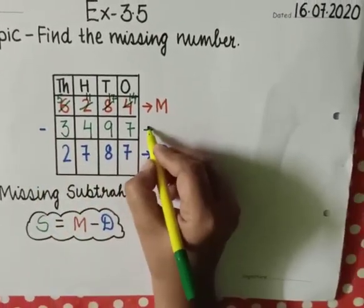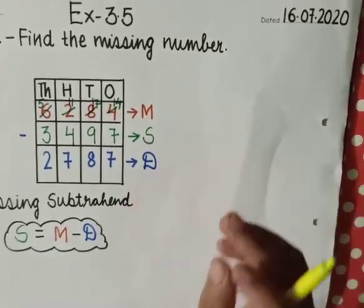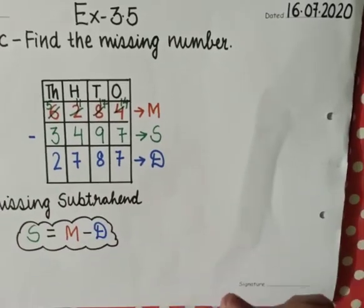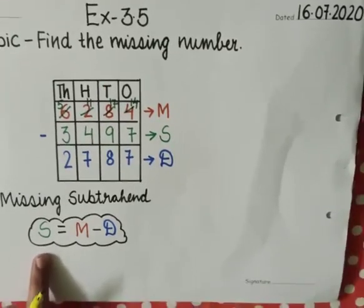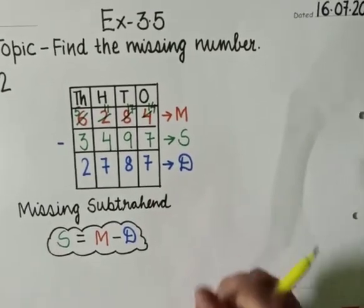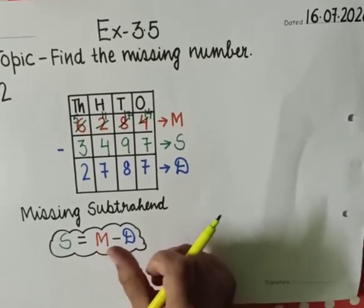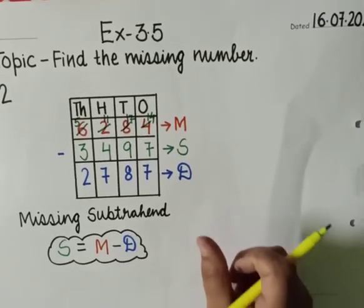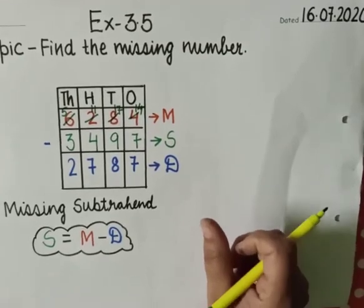So students, by using this strategy of question number 1 for finding the missing minuend and the strategy of question number 2 missing subtrahend, you can do question number 3 properly. So before attempting the question in your book, kindly follow the instructions and procedure for finding the missing number from the video. Thank you so much and have a good day.